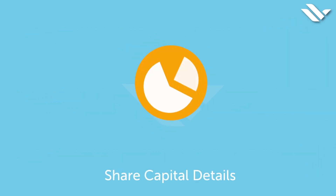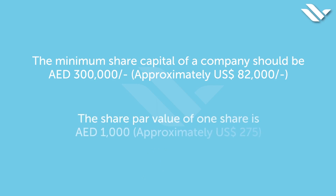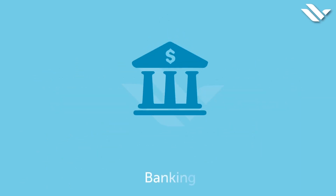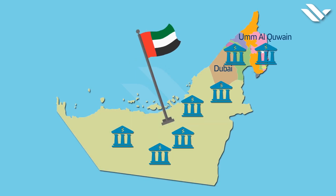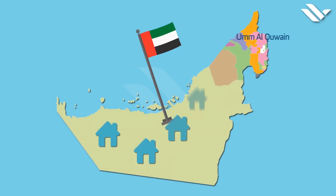Now let's move to the share capital details. The minimum share capital of a company should be 300,000 dirhams, approximately 82,000 US dollars. The share par value of one share is 1,000 dirhams, approximately 275 US dollars. Banking: the companies licensed can carry out banking activities anywhere in the UAE. Residents: the visa holder can reside anywhere in the UAE.